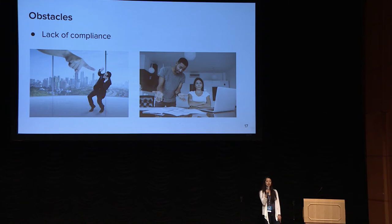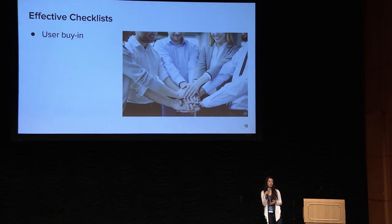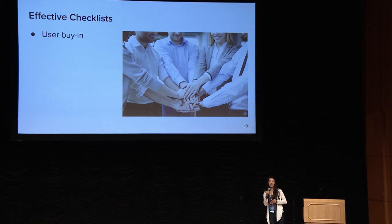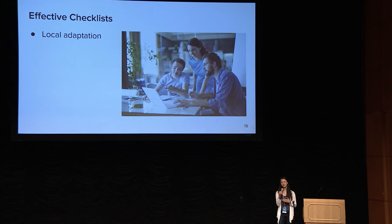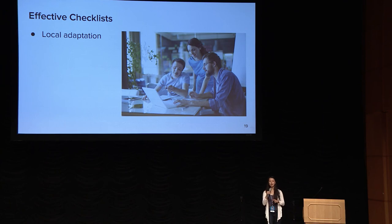So how do you combat this? You have to get user buy-in from leadership and your end users. To do this, you can try to enlist a local champion — someone who can help rally people by pulling on their heartstrings or presenting some evidence so that they can commit to using the checklist. Also, as with any tool, you want to locally adapt your checklist for the needs of your organization. You can do this by soliciting feedback, or better yet, having users help create the checklist.